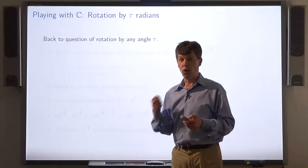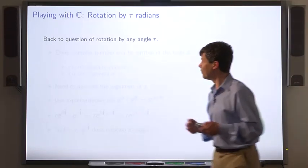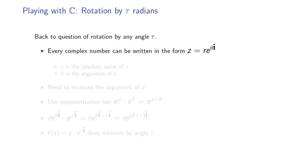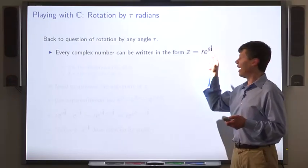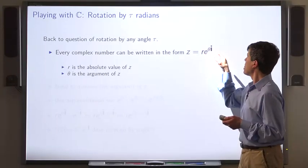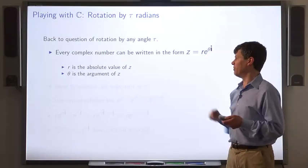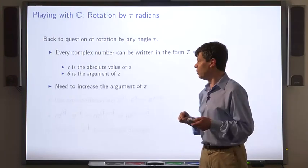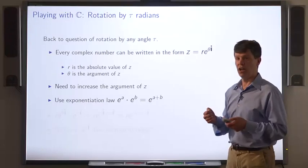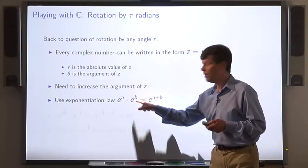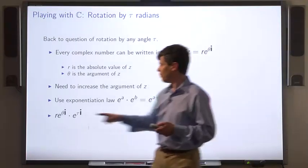Let's see how we can use Euler's formula to rotate points by any angle tau. Any complex number can be written in this form: z equals r times e to the theta i, where r is a real number, which is the absolute value of z, and theta is the argument of z. What we want to do is increase the argument of z. We'll use the exponentiation law: e to the a times e to the b is e to the a plus b.